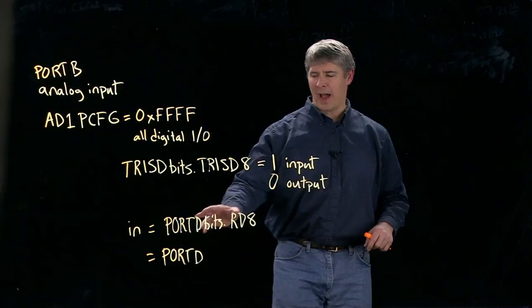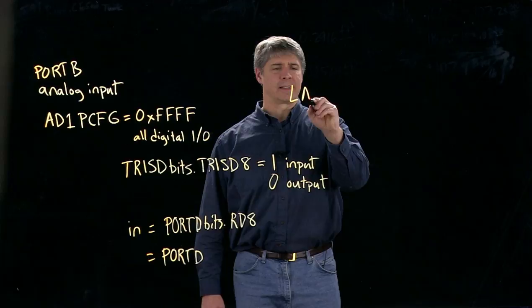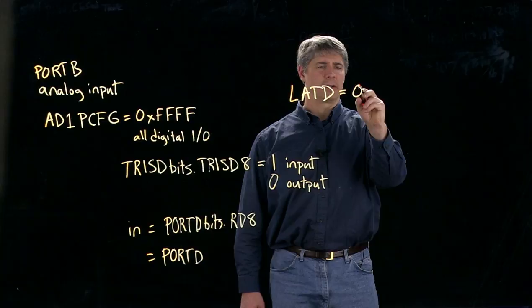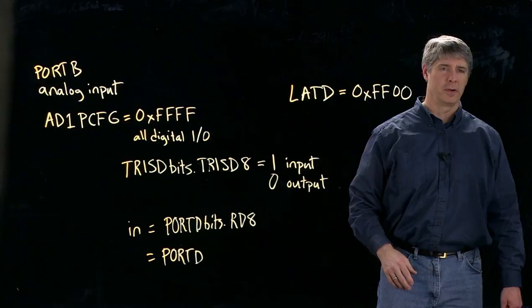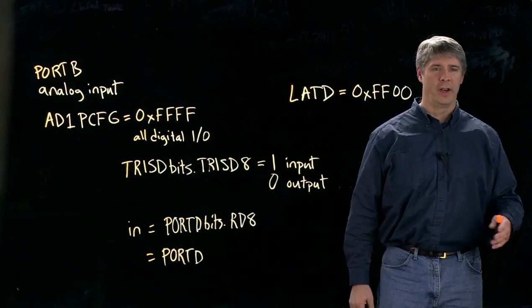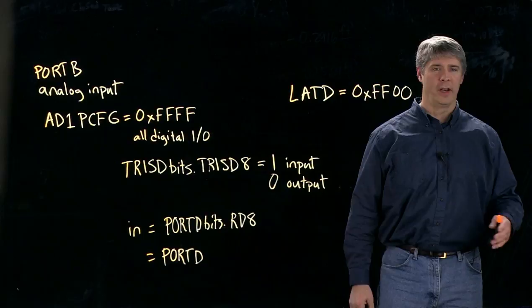If they're output pins, if we have it configured as an output, we can write to LATD. And if we write LATD is equal to 0xFF00, for example, then this means that pins 0 through 7 have a 0 output or low voltage, 0 volts. And this means pins 8 through 15 have a high or 1 output, so close to 3.3 volts.